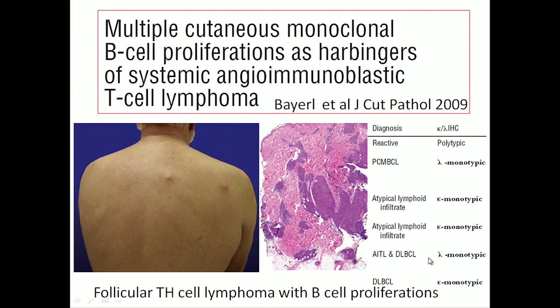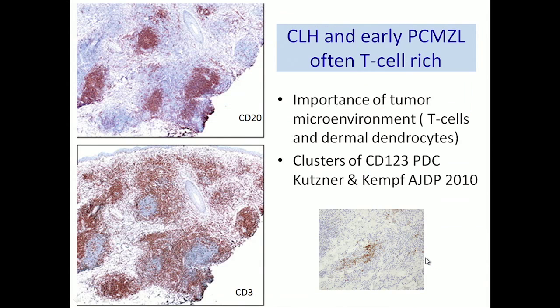We've seen cases where patients with angioimmunoblastic T-cell lymphoma — follicular T-helper driven — develop multiple skin infiltrates over time, which may be monotypic or polytypic. When you find one lesion that is kappa-restricted and another that is lambda-restricted, be aware that you have a T-cell-driven lymphoproliferative process. Look for those T-cell lymphomas, as the skin lesions may present before the nodal lesions.